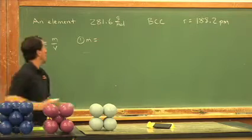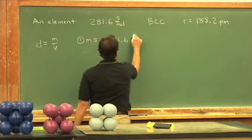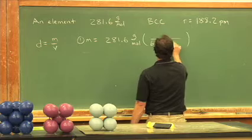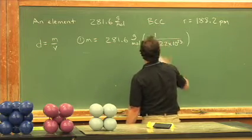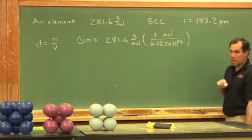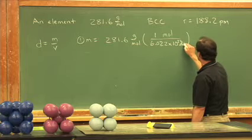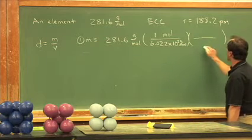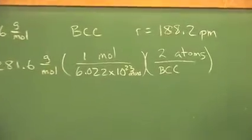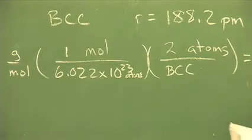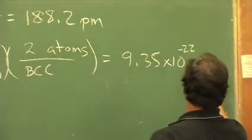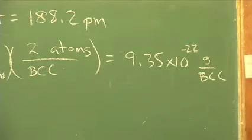So the math looks like this. We have 281.6 grams per mole. Let's divide by Avogadro's number. One of anything a mole is equal to 6.022 times 10 to the 23rd of anything. This would be atoms. And there are two atoms in this BCC unit cell. And I come up with a value of 9.35 times 10 to the negative 22nd grams per BCC cell.